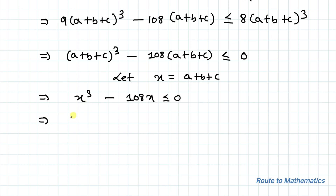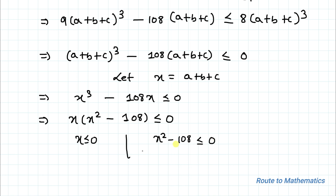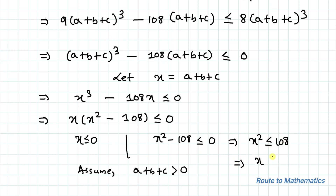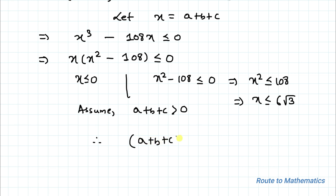Factoring: x(x² − 108) ≤ 0. Assuming a+b+c > 0, we need x² ≤ 108, so x ≤ √108 = 6√3. Therefore the maximum value of a+b+c is 6√3. I hope you have understood the solution. Thanks for watching — please subscribe to my channel and click the bell icon for more such interesting videos!